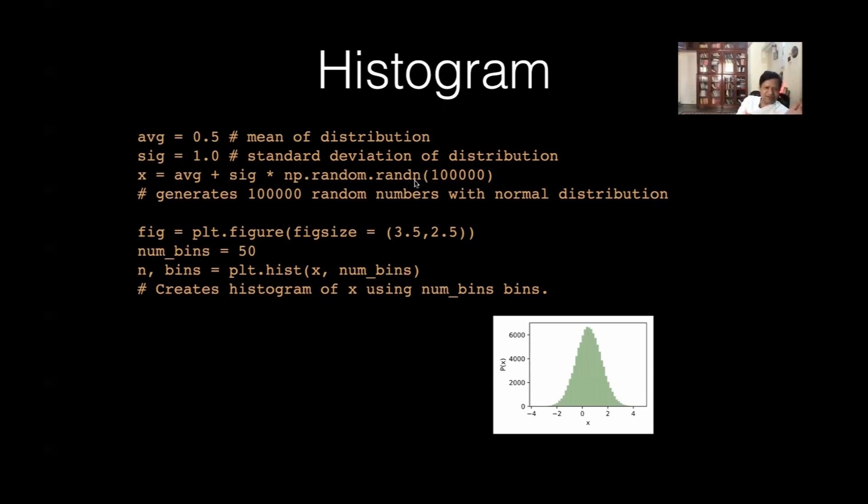So, this is, this function creates random numbers of Gaussian profile. Rand n is n for normal. Okay. Normal distribution.